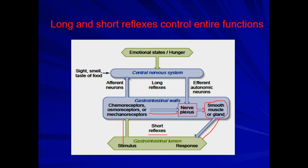The long reflexes involve the nervous system and the autonomic nervous system. The central nervous system can affect GIT function via emotional states, hunger, sight, smell, and taste of food. All these stimuli can stimulate the central nervous system, which then sends impulses via autonomic neurons to modulate the built-in nerve plexuses and then stimulate the muscle or gland to elicit the response.